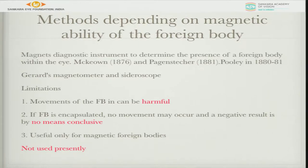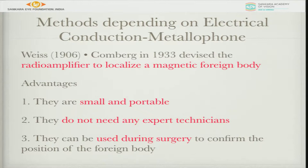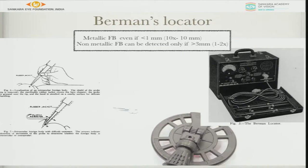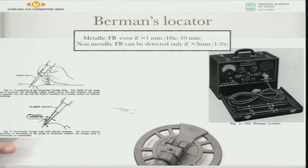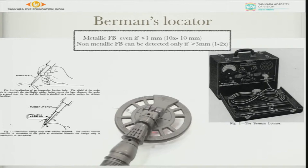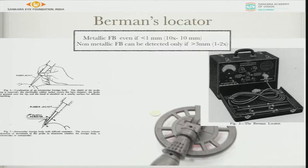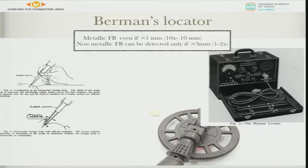The movement of a foreign body can cause more damage, so electrical conduction identification is important. This device, called a metaloscope, is small and portable. This is how it works — it identifies where the metal is located. A similar kind, called a Berman locator, was used before, and this same technology is still used now to identify metal superficially.